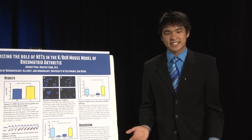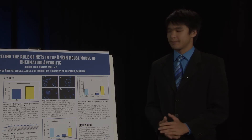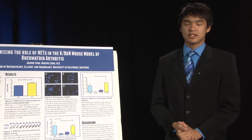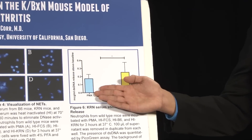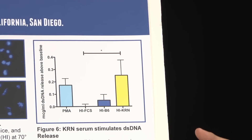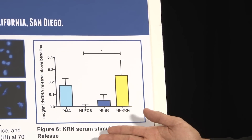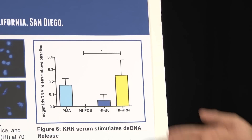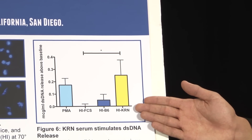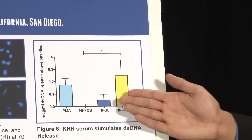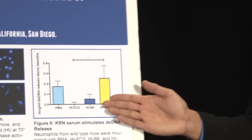We then wanted to see how much double-stranded DNA was released by these neutrophils. Correspondingly, we find that the neutrophils chemically stimulated had high levels of double-stranded DNA release. Similar to figure 5, the unstimulated neutrophils had low levels of double-stranded DNA release. We find that the heat-inactivated KBXN serum caused high levels of double-stranded DNA release, while the heat-inactivated wild-type serum had low levels of double-stranded DNA release.